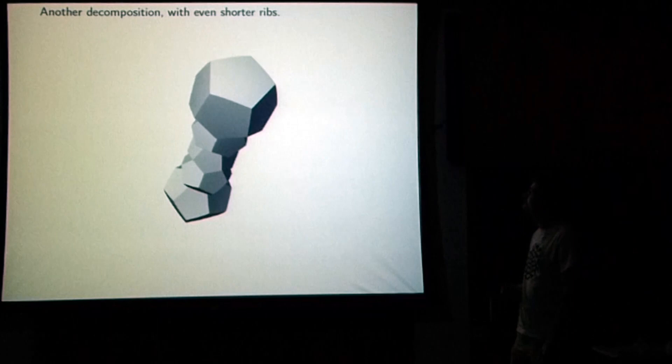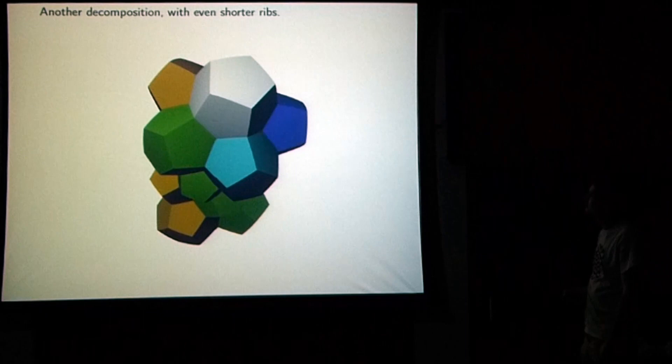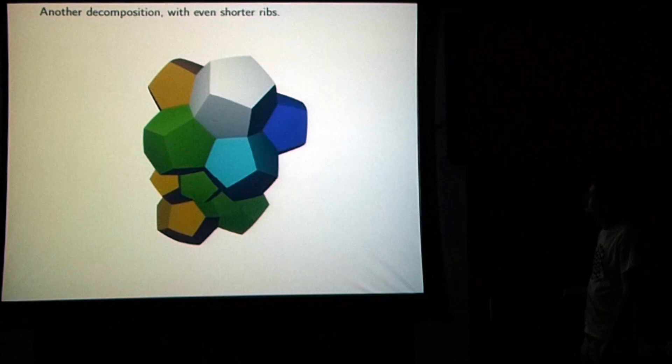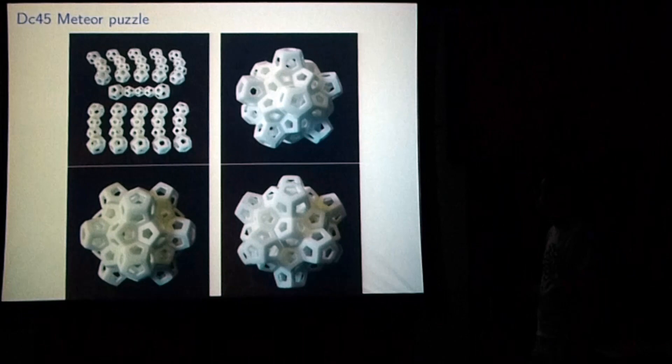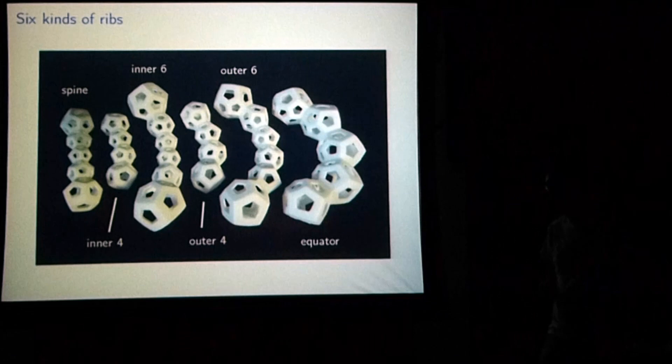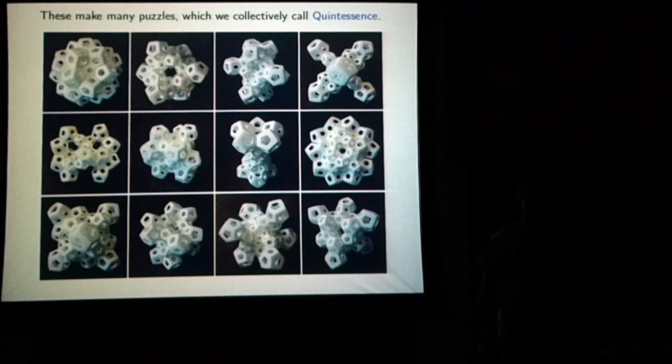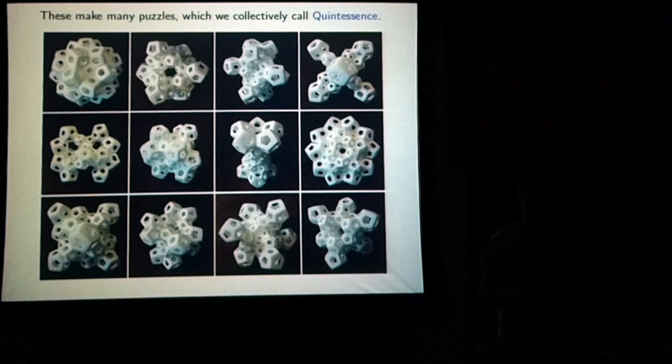What if instead we start with shorter ribs — one sort of central axis, five short little ribs curving around it one way, and another five curving around the other way? They make this object with dodecahedral symmetry. We call this the DC 45 meteor puzzle. These 11 pieces can be put together to form this object. We ended up deciding on six different kinds of ribs — six different ways to cut these rings up into six different kinds of pieces — and these make many, many different puzzles. We were actually very surprised at how many different things you can make.